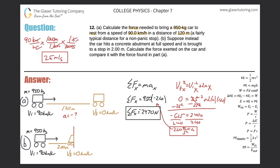Let's move on to letter b: Suppose instead the car hits a concrete abutment at full speed and is brought to a stop in two meters. Calculate the force exerted on the car and compare it with the force found in part a.